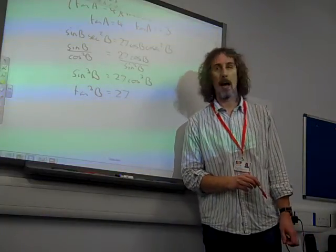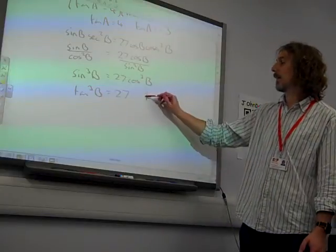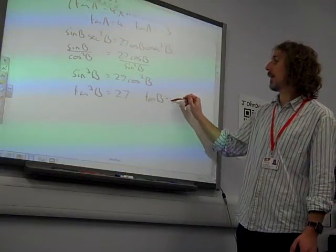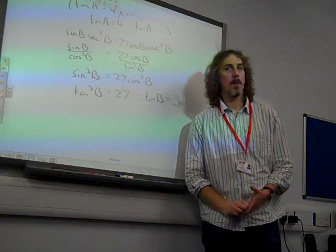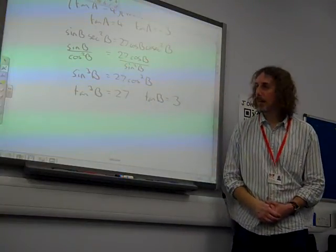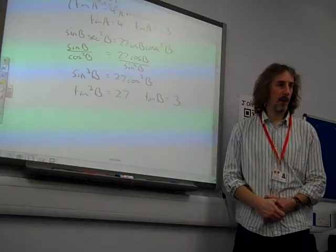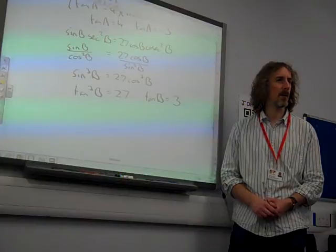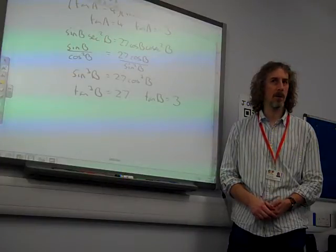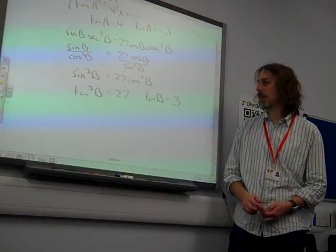Oh, that's lovely. If tan³B is 27, tan B is 3. Remember not to get carried away with these things. It means if something cubed is 27, the thing is not plus or minus 3. You only do plus or minus if it's an even power, don't you? So tan B is 3.